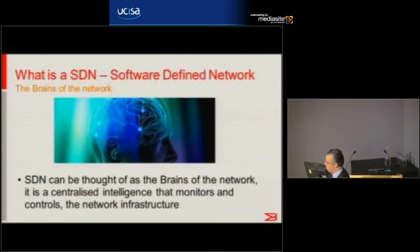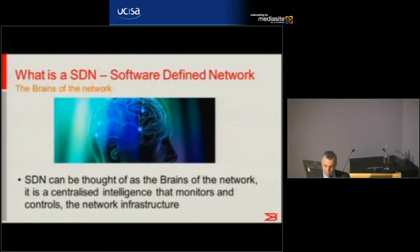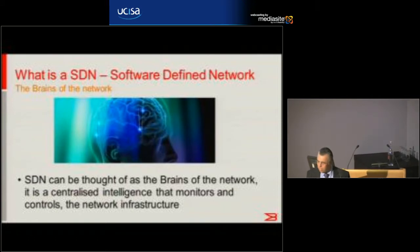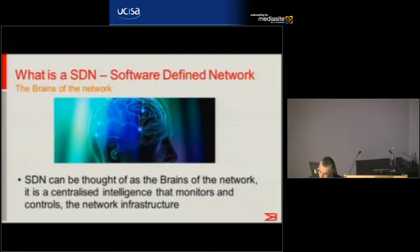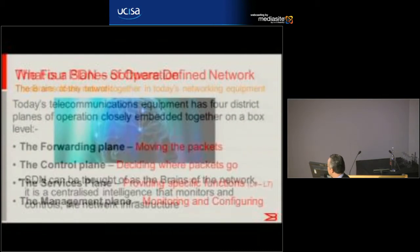In simple terms — because if you can't explain it simply you don't understand it — SDN is the brains of the network. Think about it like the brains. A brain is a centralized intelligence. One of the ways you can recognize an SDN network is some kind of centralization of intelligence. It doesn't mean a single centralization, because we all know about single points of failure, but it means we've got a more centralized intelligence.